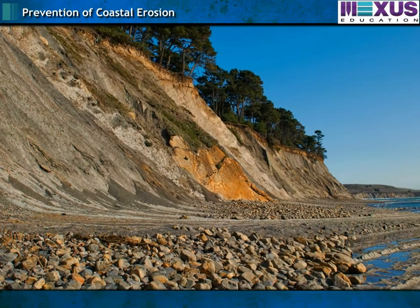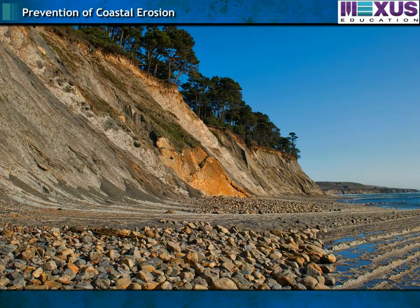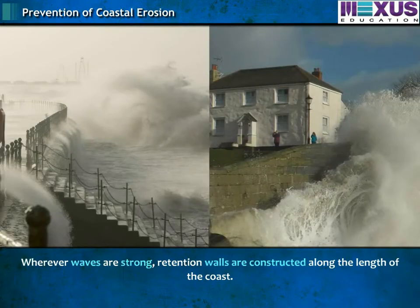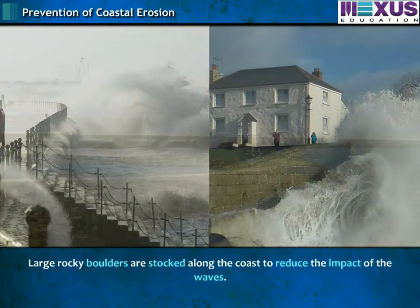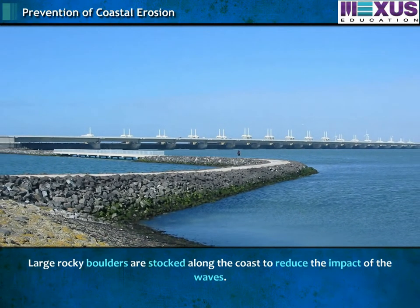A number of prevention measures are being followed to avoid coastal erosion. In coastal areas, sand mining is prohibited. Wherever waves are strong, retention walls are constructed along the length of coast. Large rocky boulders are stacked along the coast to reduce the impact of the waves.